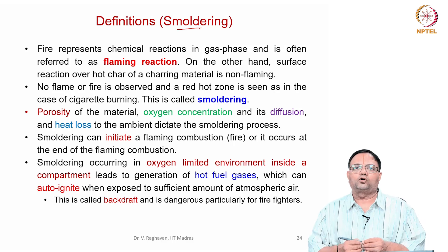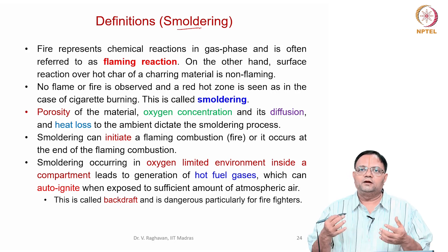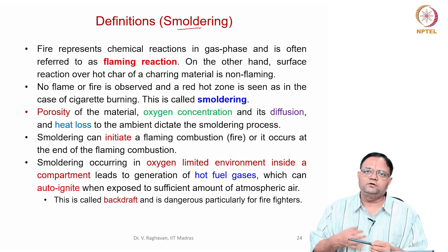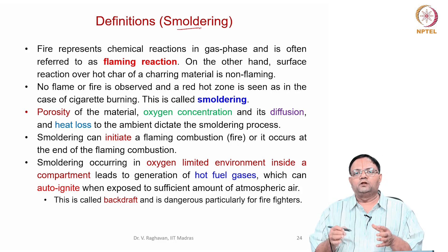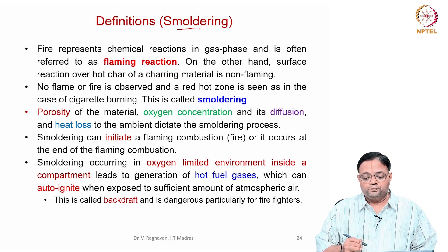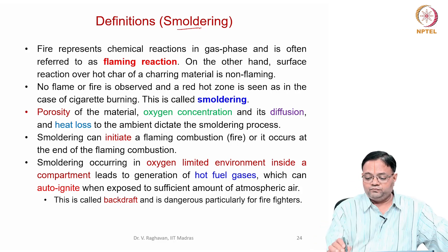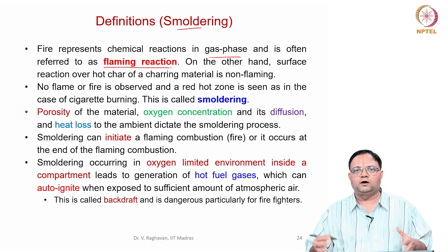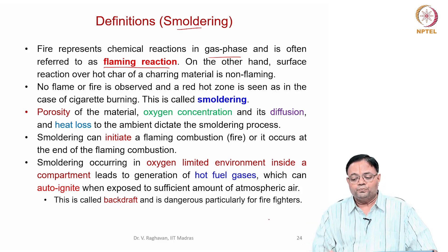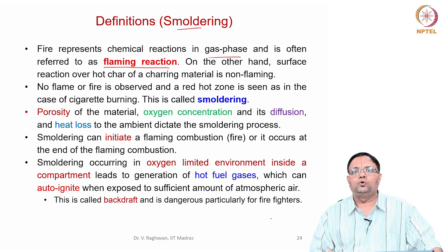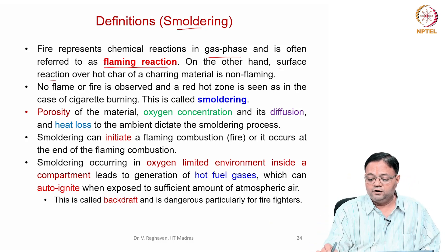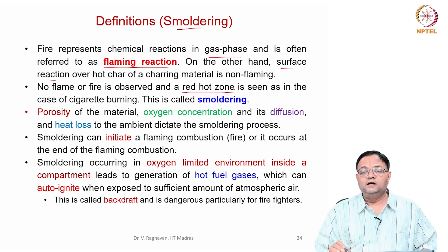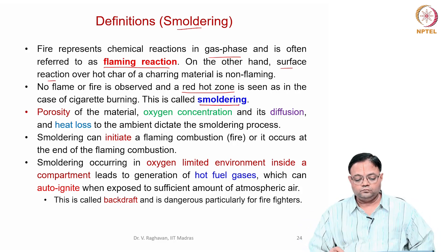Similarly, if you take a charcoal and try to ignite it, you will see that it will be red hot — the surface will become red hot. There will be no visible flame, there will not be much gas phase activity, only a small amount of gas will come out, but you can see there is no visible flame and only a red hot surface. Normally a fire in gas phase is called a flaming reaction — a set of laminar flames or a combination of laminar flames. The gas phase reactions will contribute to visible flame, but the surface reaction will not contribute to any flame and only you will see a red hot zone. Such a process is called smoldering.